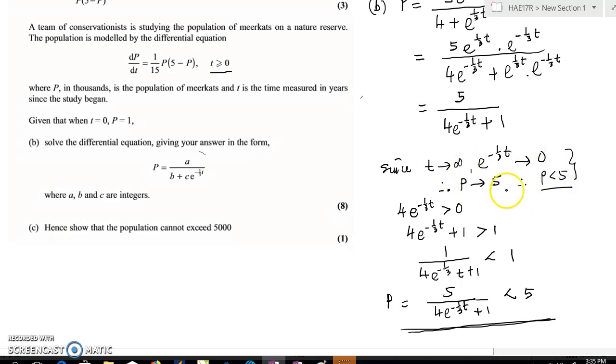But this is just to explain to you why - why end up with P less than 5. So in this case, the population will be less than...